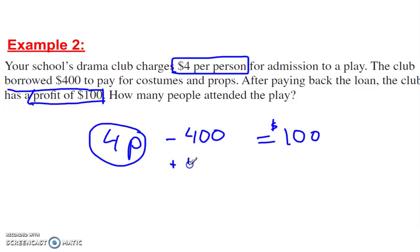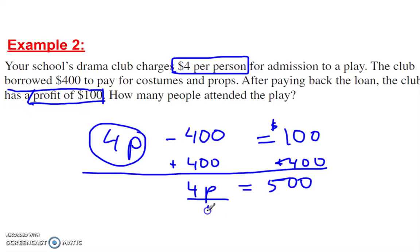circle, plus $400, plus $400, and then we get $4P is equal to $500. Divide by 4 on each side, and there were 125 people who attended this play.